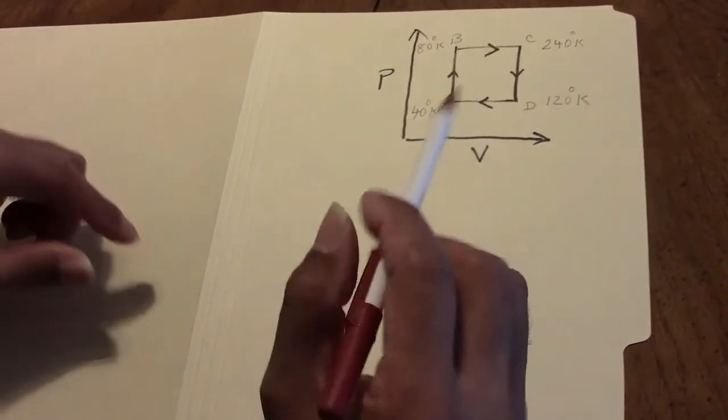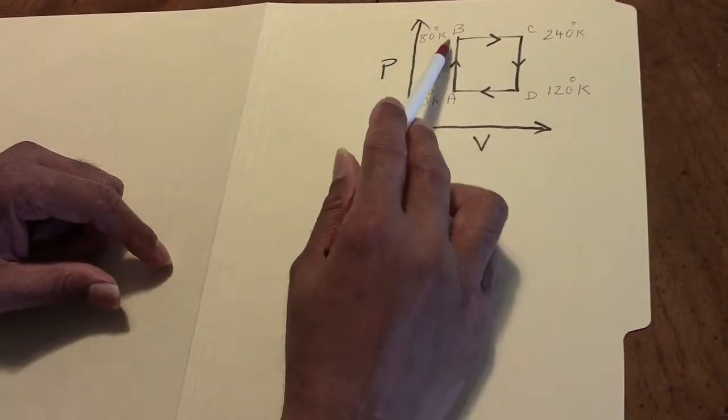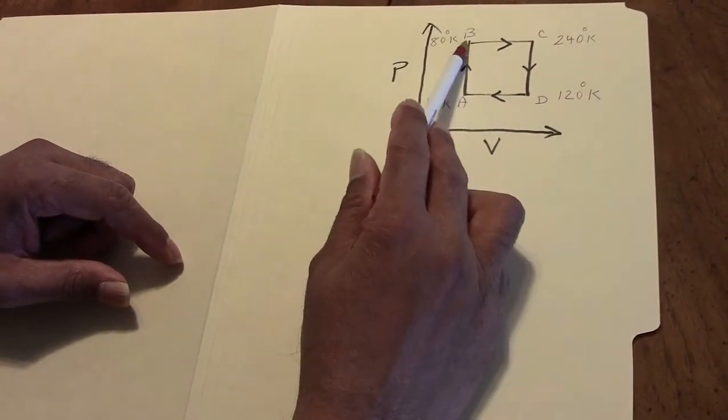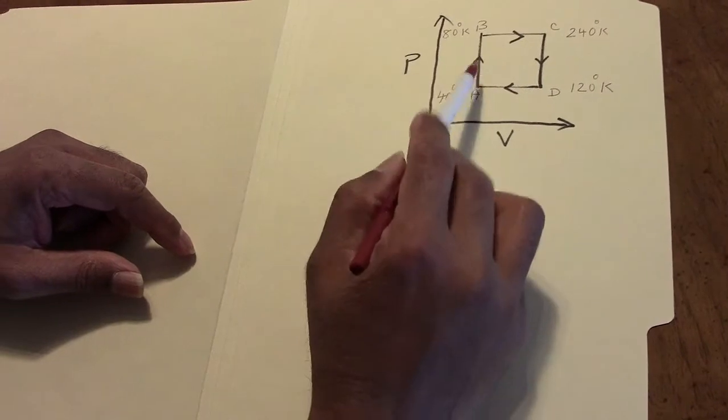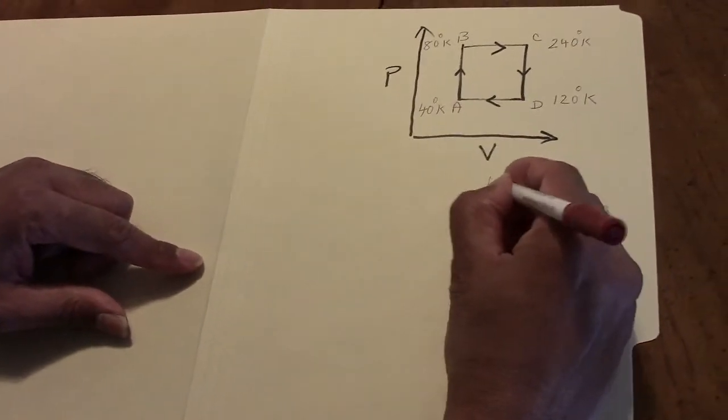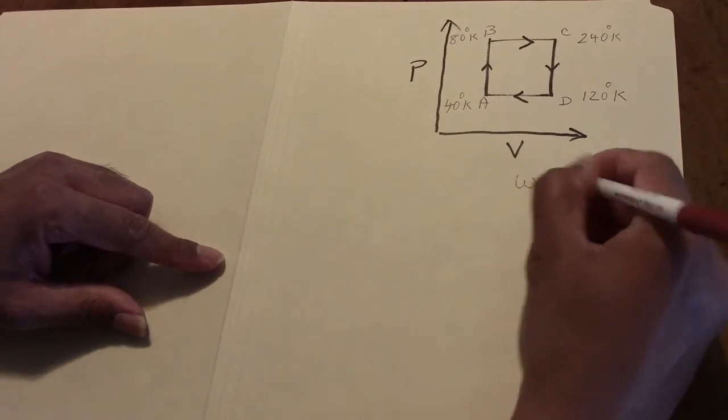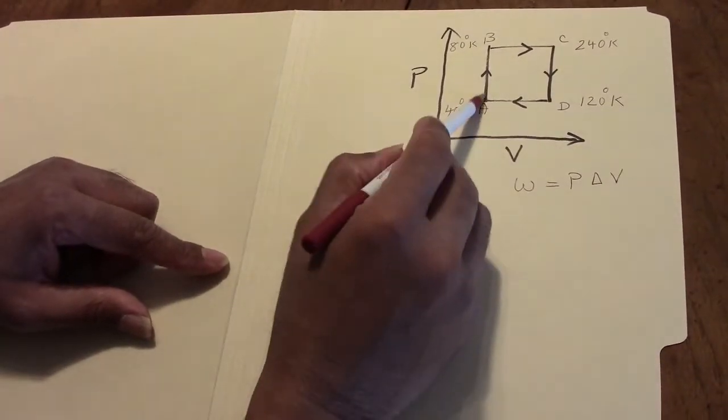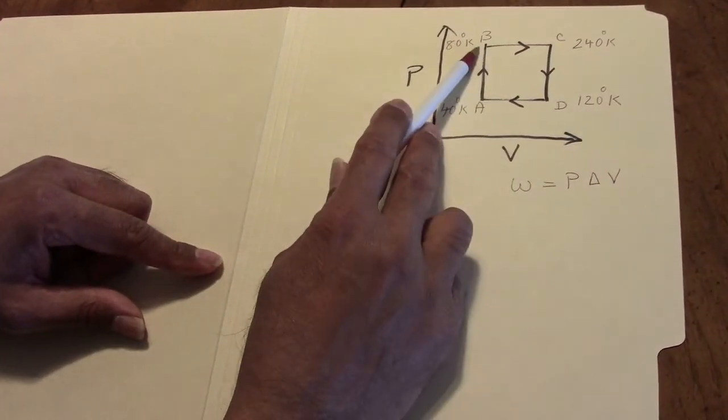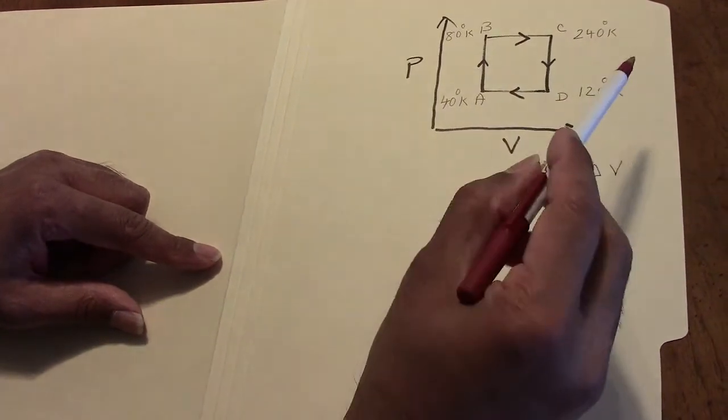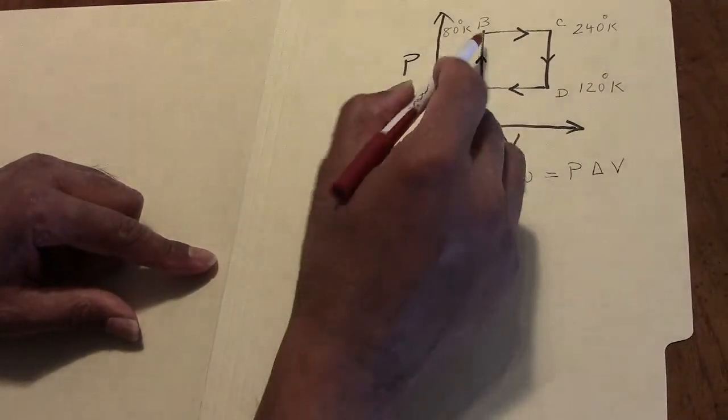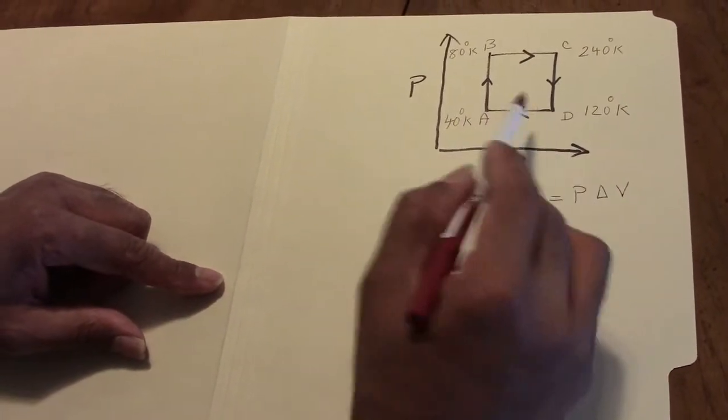Now we know that no work is done by the gas along the path A to B because here the volume is constant and the work done is defined by pressure times change in volume. There is no change in volume from A to B nor is there any change in volume from C to D. Therefore, no work is done along these paths.